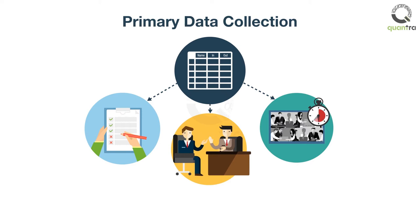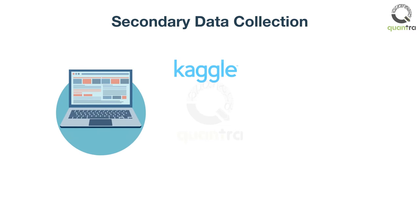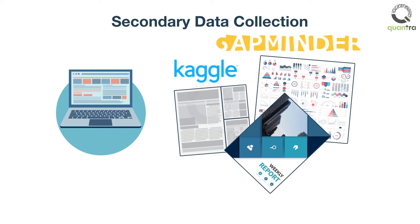Another method is to use the data which is readily available or collected by someone else. This data can be found on open source websites such as Kaggle, Gapminder, news articles, government census, magazines, and so on. This method is called secondary data collection. It is less time consuming than the primary method.